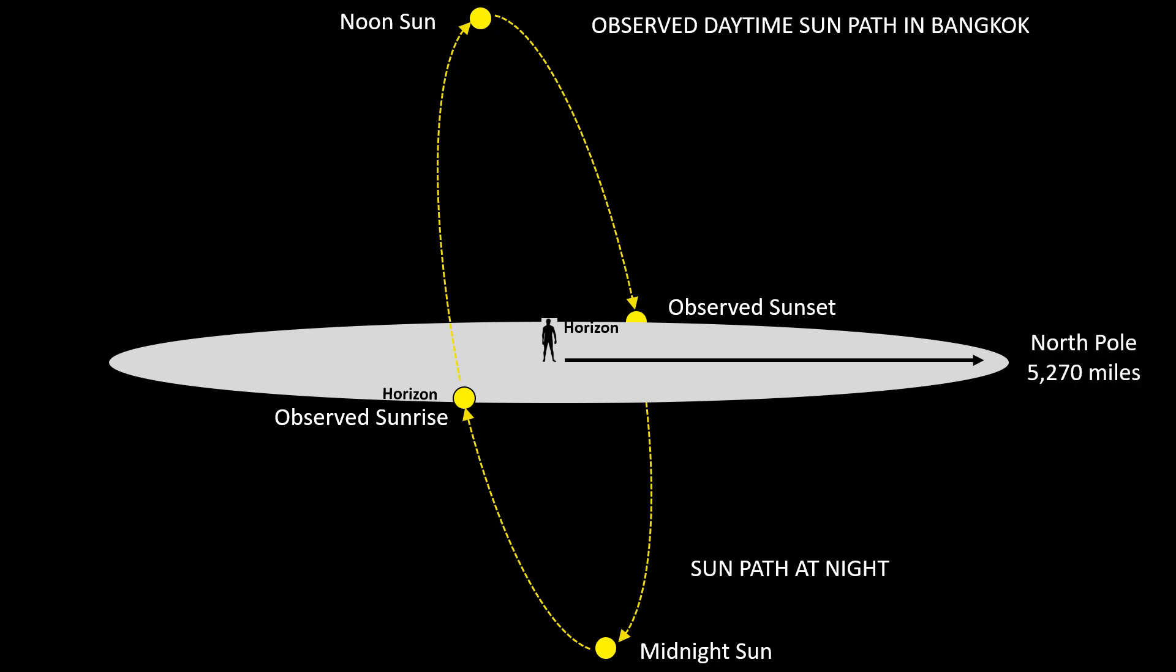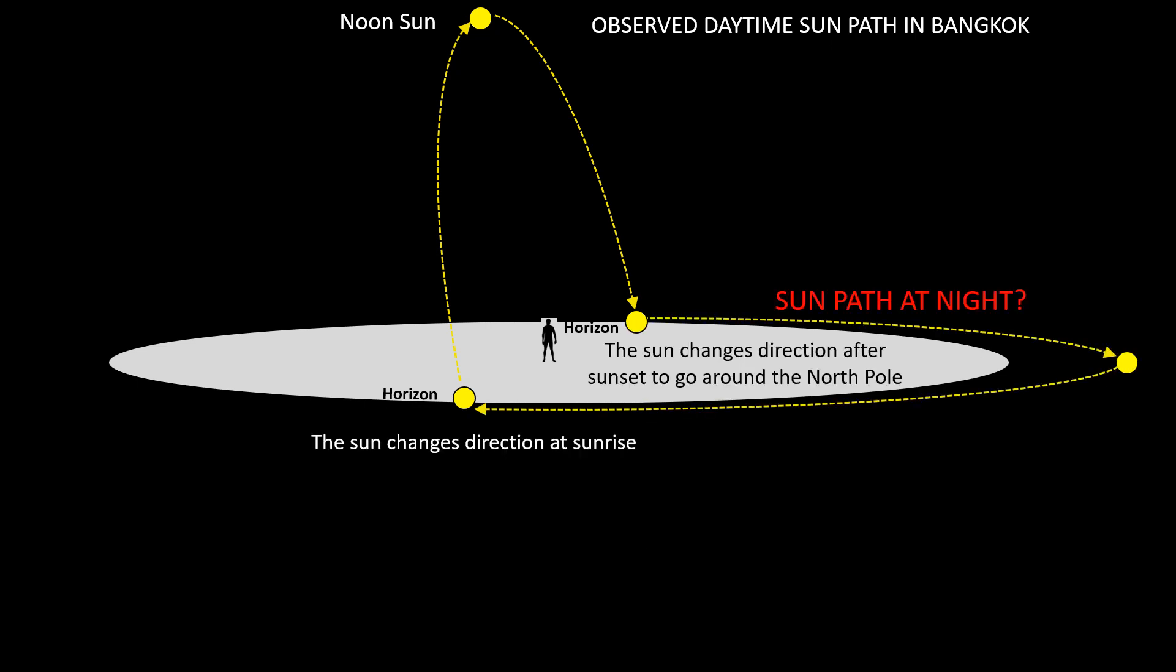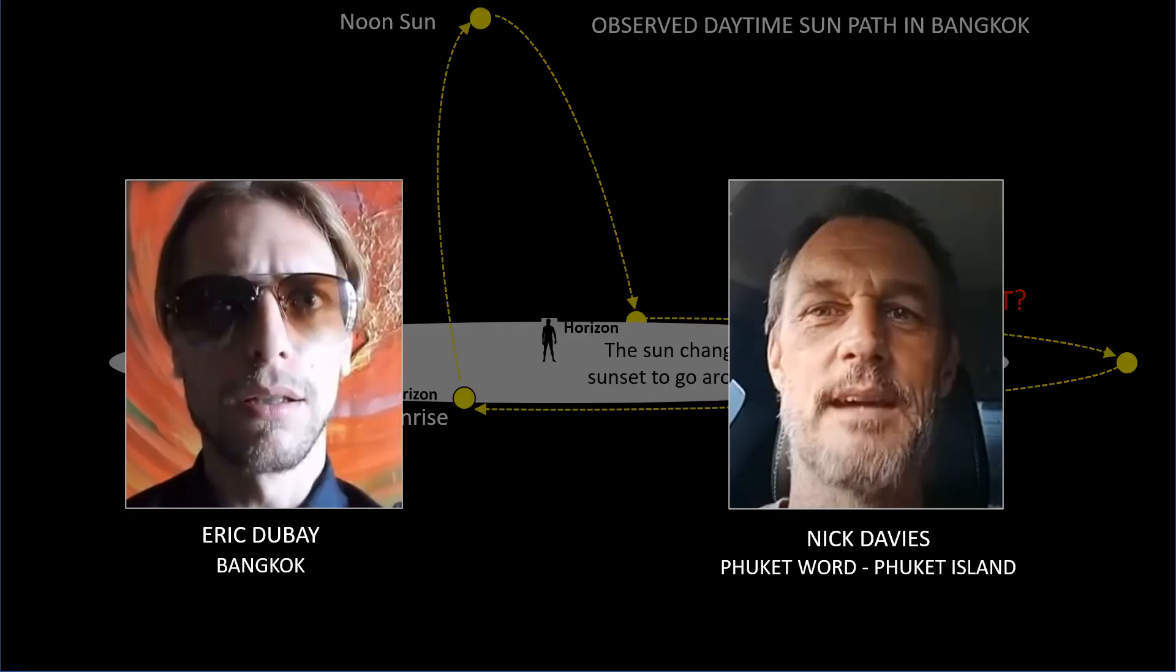Now the North Pole is about 5,270 miles to the north of me. So if Flat Earthers really think the Sun does not continue on that same path below the horizon at night, that means the Sun would have to change direction both after sunset and before sunrise to go around the North Pole. And to be honest that makes absolutely no sense at all. But here are two well-known Flat Earthers that think that the Sun does go around the North Pole.